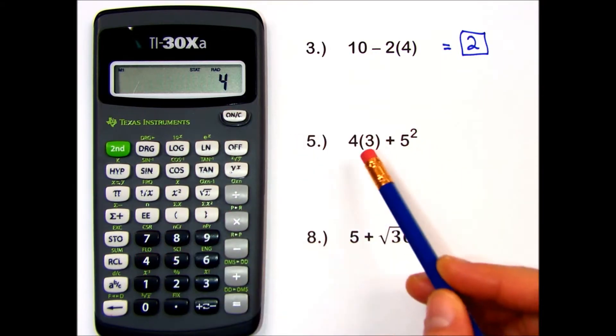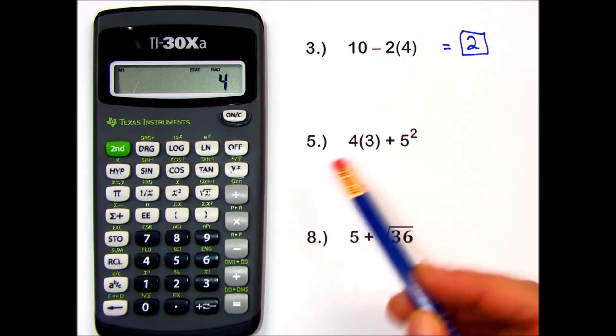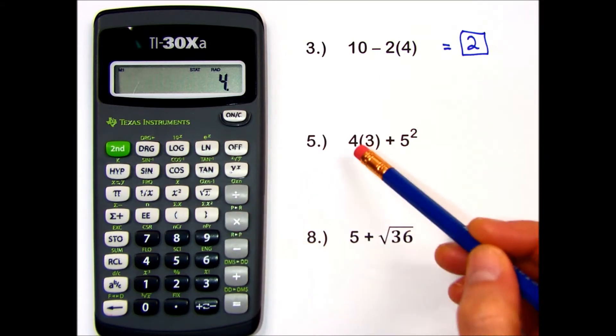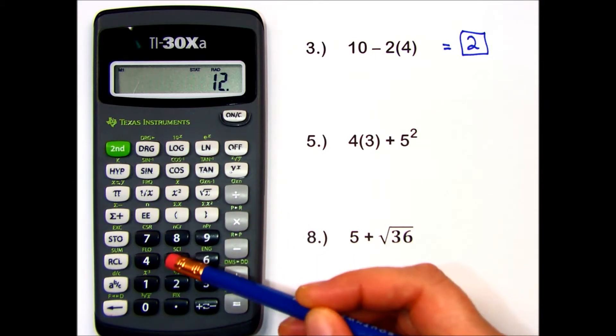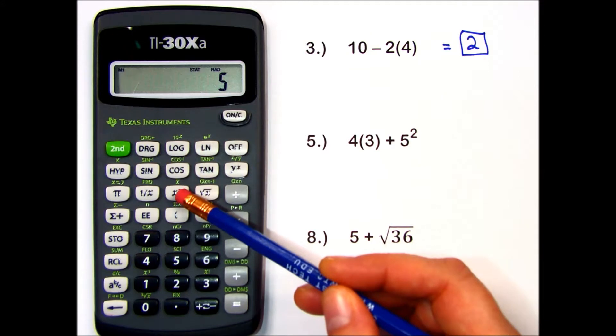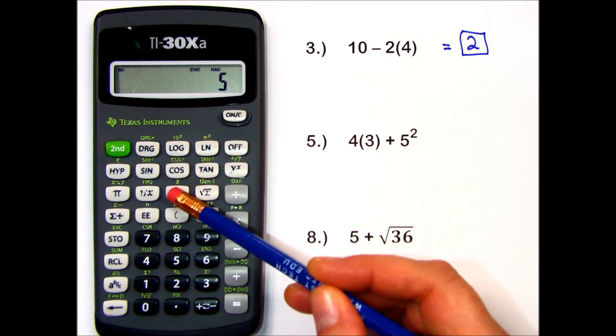4 times 3. I have to press the times key, even though we did not write it. Plus 5. And I'm going to make use of my x squared button, which is right here.